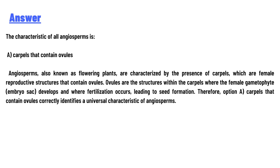The characteristic of all angiosperms is carpels that contain ovules. Angiosperms, also known as flowering plants, are characterized by the presence of carpels, which are female reproductive structures that contain ovules. Ovules are structures within the carpel where the female gametophyte develops and where fertilization occurs.